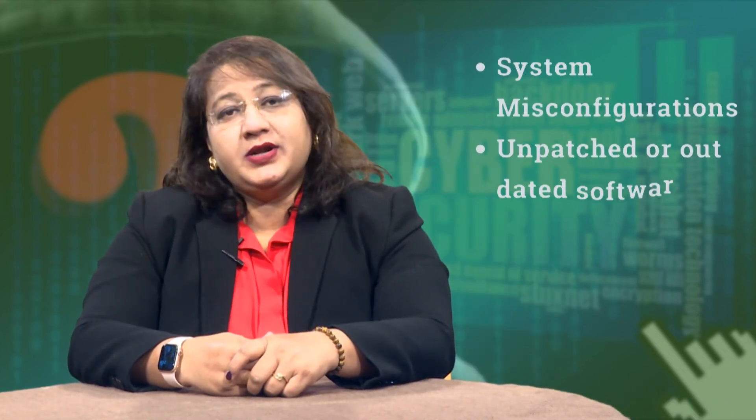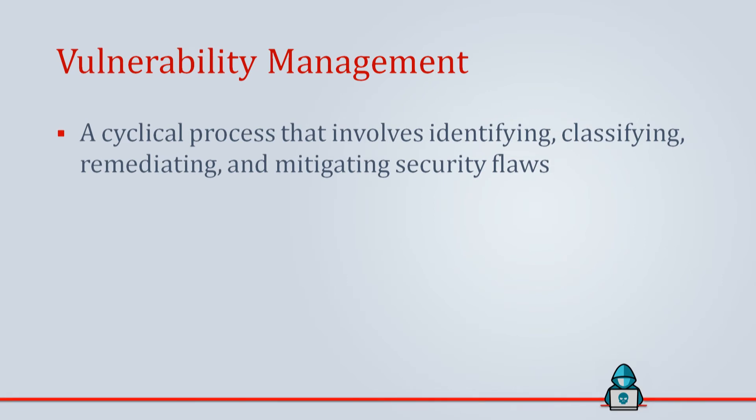After understanding what vulnerability is, we also need to learn types of vulnerability: system misconfiguration, unpatched or outdated software, and missing or poor data encryption. We also need to understand what vulnerability management is and how it works. Vulnerability management is a cyclical process that involves identifying, classifying, remediating and mitigating security flaws. It consists of three components: vulnerability detection, vulnerability assessment and vulnerability remediation. The three ways for detecting vulnerabilities are vulnerability analysis, Google hacking and penetration testing. VAPT is an important aspect to secure IT infrastructure and its access management, and is important for cyber security to avoid cyber issues.